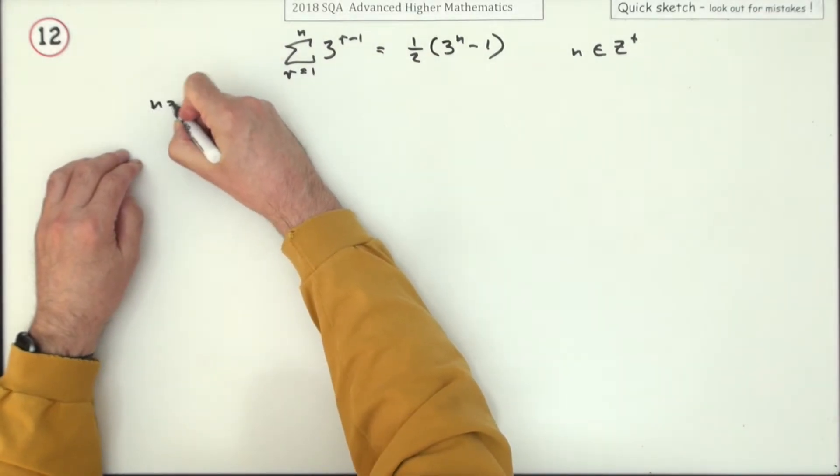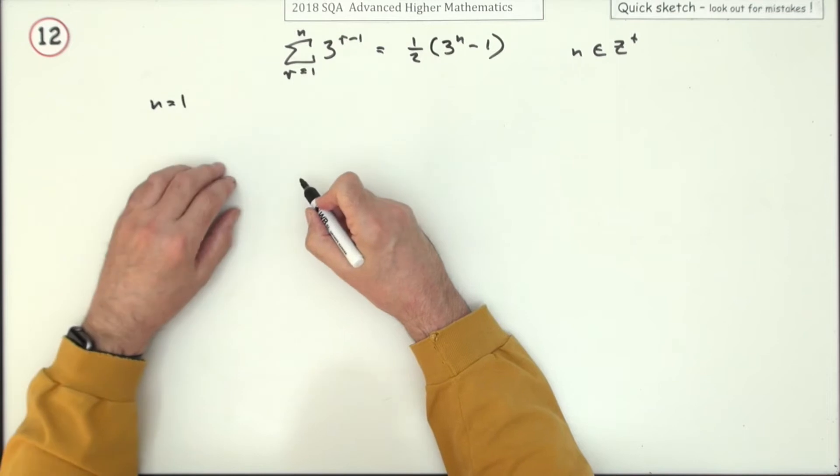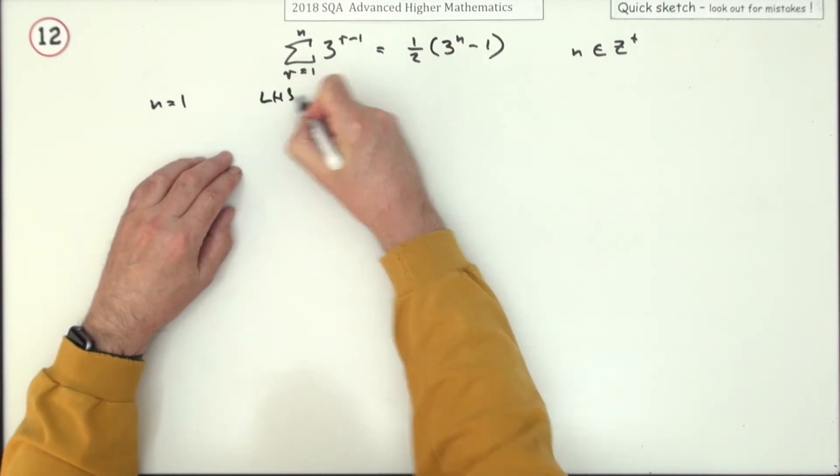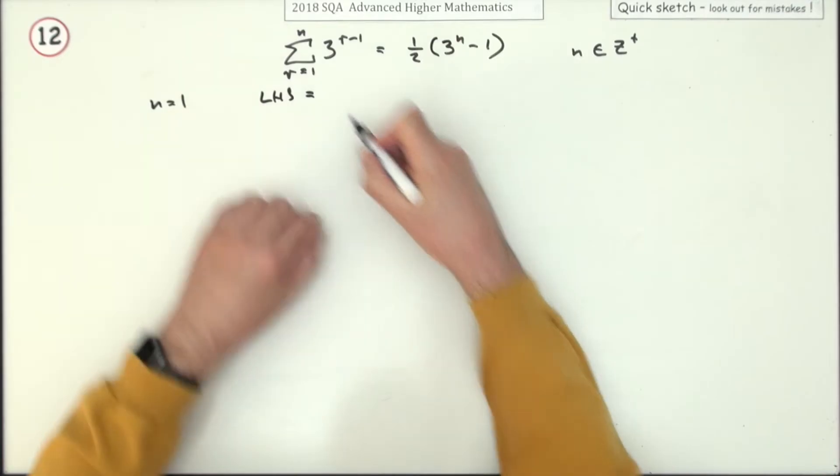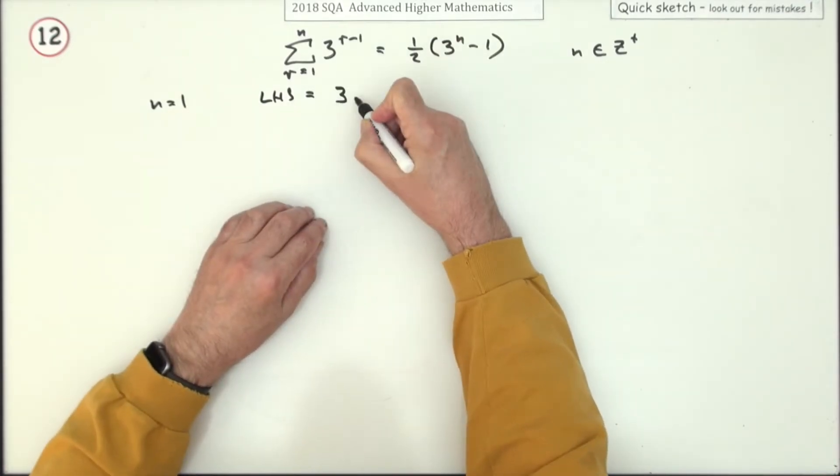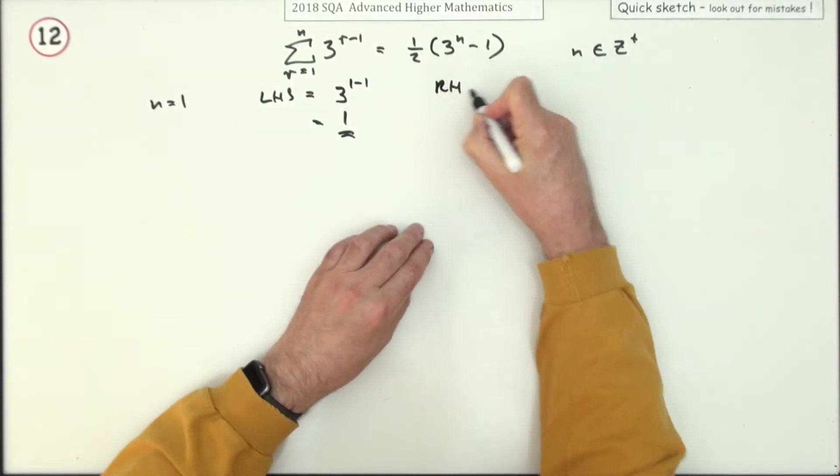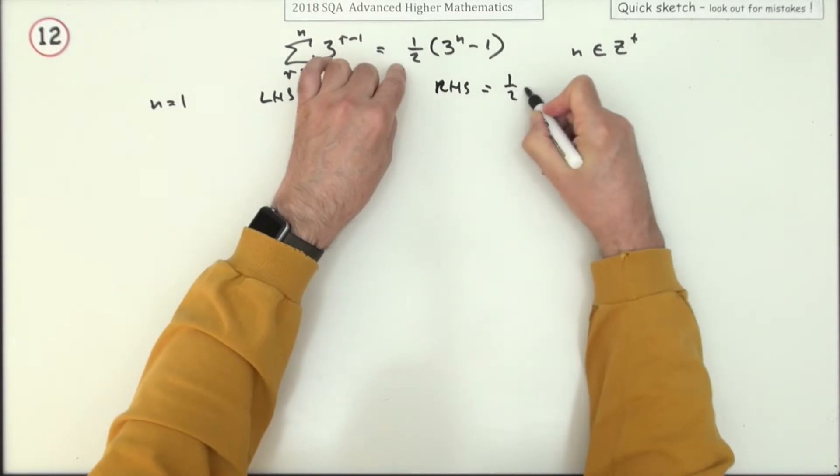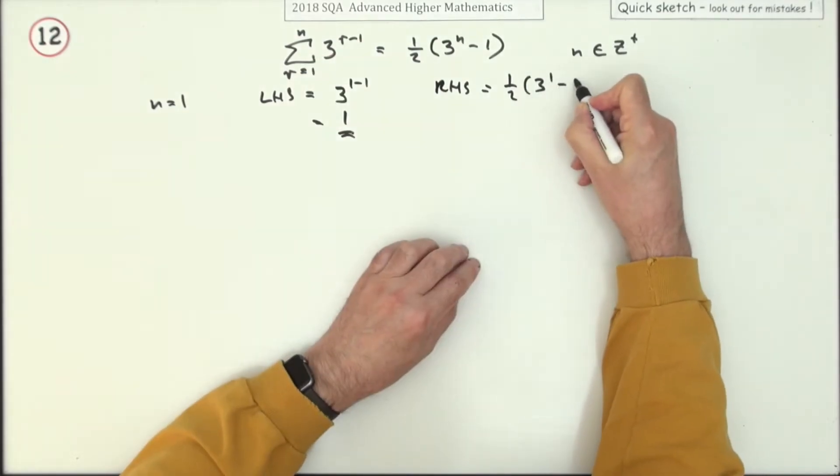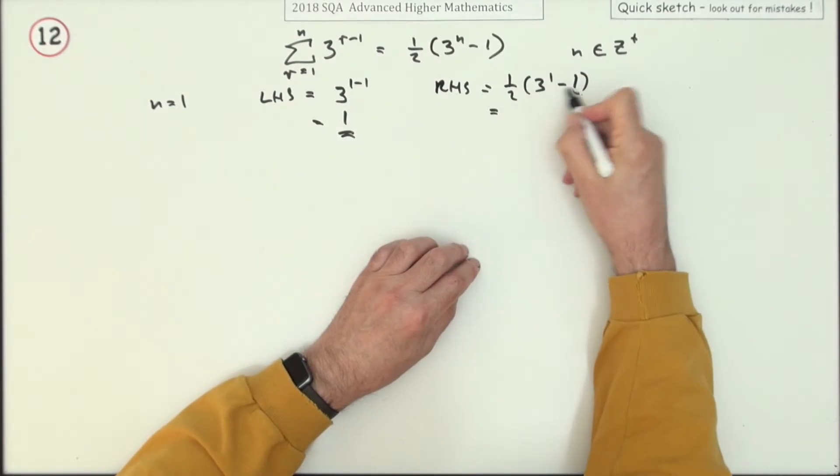First of all, you check for n equals 1, see if it's true at the start. Do the two sides. What's the left-hand side if n is 1? Well, that'll just be the first term, that'll just be 3 to the 1 minus 1. 3 to the 0 is 1. Now we've got the right-hand side. That'll be a half of 3 to the power 1, minus 1. So that's 2, and a half of 2 is 1.